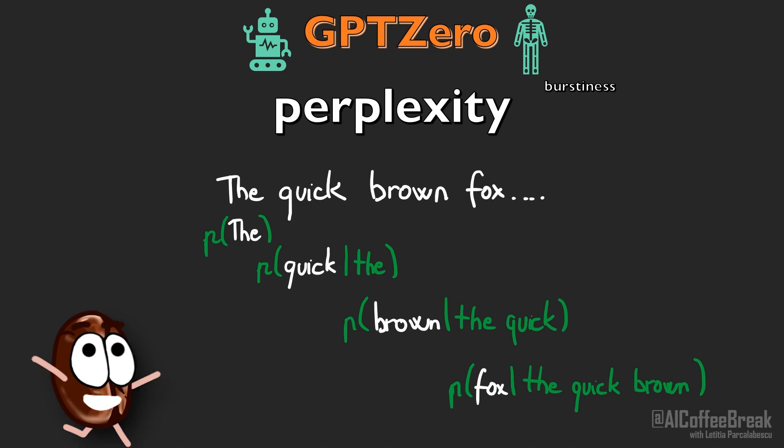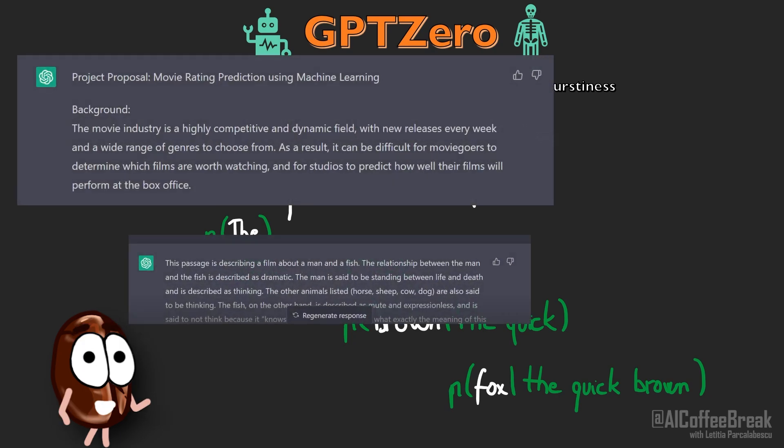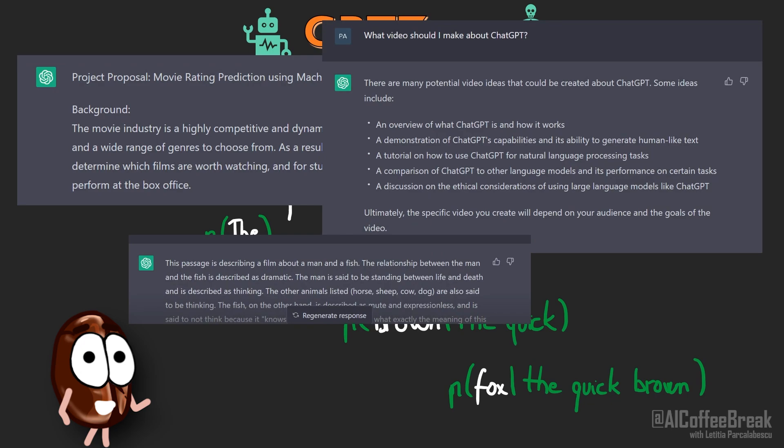The best part is that to build a model that measures the perplexity or probabilities of another language model, such as ChatGPT, one does not need direct access to ChatGPT's weights, access which only OpenAI has. All one needs is a lot of ChatGPT outputs, the more the better. This is something that an API can deliver.